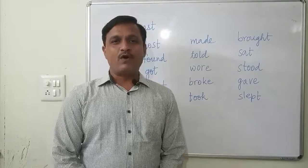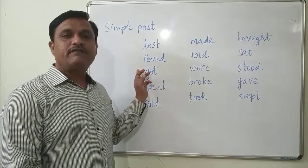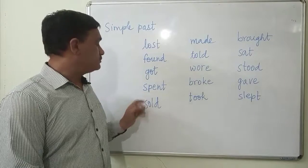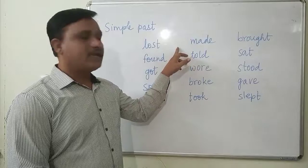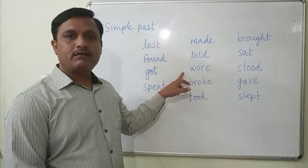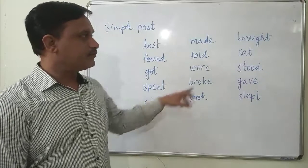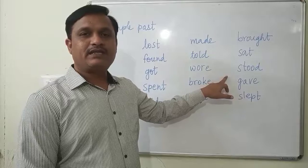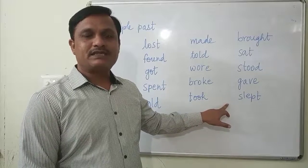Now let us know the basic forms of these words. Lost — lose (L-O-S-E). Found — find. Got — get. Spent — spend (S-P-E-N-D). Sold — sell (S-E-L-L). Made — make (M-A-K-E). Told — tell (T-E-L-L). Wore — wear (W-E-A-R). Broke — break (B-R-E-A-K). Took — take (T-A-K-E). Brought — bring (B-R-I-N-G). Sat — sit. Stood — stand (S-T-A-N-D). Gave — give (G-I-V-E). Slept — sleep (S-L-E-E-P).